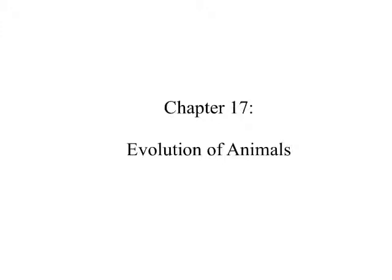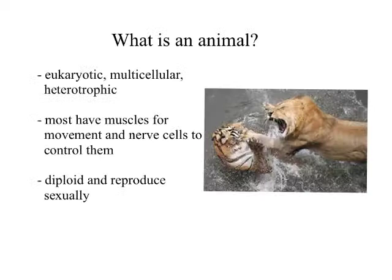So far in this unit of evolution and diversity, we've talked about natural selection and how populations evolve. We've talked about how species can come about, and we've focused on the progression or the evolution of life starting with the microbes, going on to fungus and plants, and now we're going to talk about the evolution of animals.